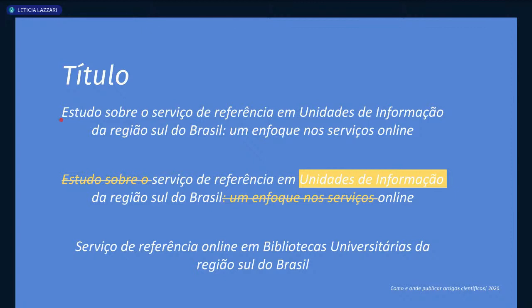Pode ser que algumas áreas não precisem colocar a região no título. Na área de história, por exemplo, é importante ter o período histórico e o local da pesquisa. Isso não é uma regra definitiva — cada área tem suas nuances. É importante que vocês busquem conhecer na sua área, junto com os professores, o que é mais comum e qual é a melhor prática. O exemplo foi apenas para ilustrar o que significa um título direto, objetivo e claro.